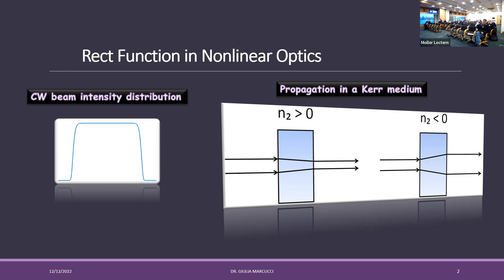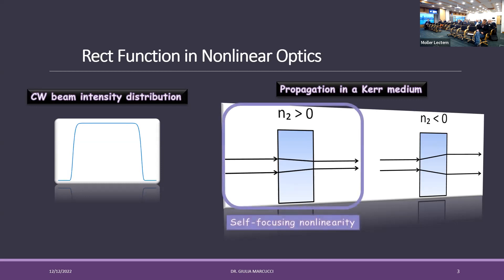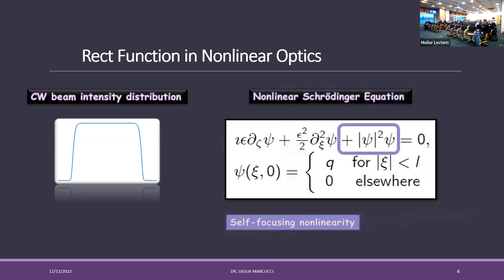I will consider self-focusing nonlinearity. The mathematical model, the Cauchy problem, is given by the nonlinear Schrödinger equation with a nonlinear potential that is intensity-dependent — dependent on the squared Euclidean norm of the field. The initial condition is again the description of a rect function.